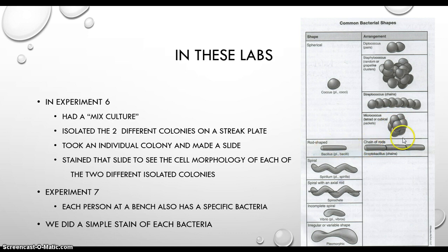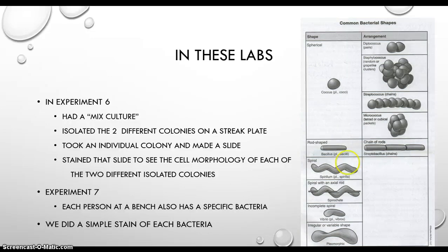For rod shapes, you have chains of rods — chains of bacilli. You can technically have a diplobacillus as well. But you'll never have a cluster of chains; if you see a cluster of chains, that means you didn't spread the bacteria out enough. It's important to spread your bacteria out when preparing the slide, because they all cluster up and you can't see the individual cell morphologies. You'll always have either random chains or a string of chains.